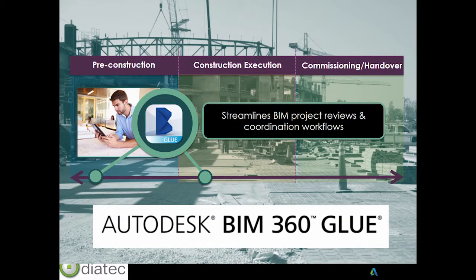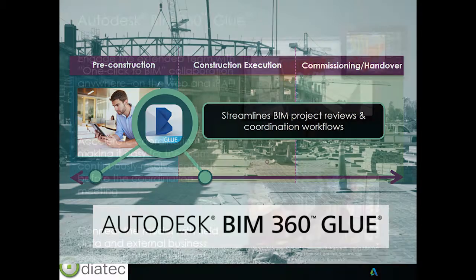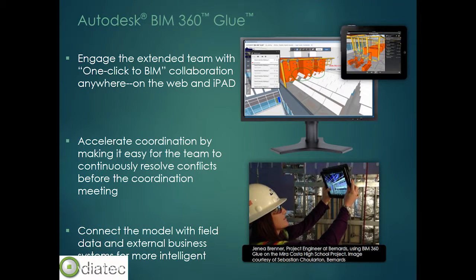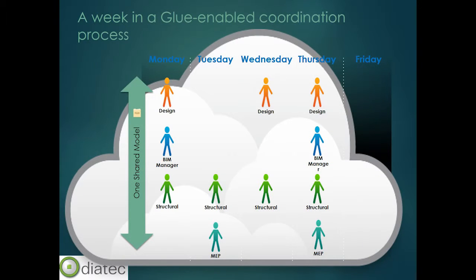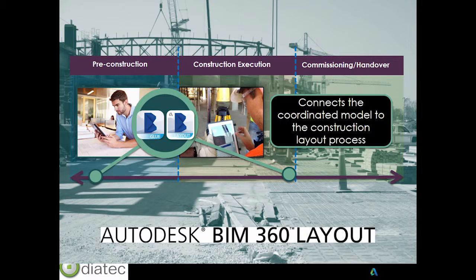When we look at Glue, it spans across pre-construction into construction execution and works on multidiscipline coordination. During the phase where a constructability model is being created, each member of the design team has an opportunity to review, discuss, and analyze what's being done across multiple disciplines. We can coordinate singular models into federated models and view them through the Glue viewing tools — redlining, markup, and viewing from anywhere, even on an iPad with the Glue application. Accelerated coordination means teams aren't waiting extended periods for issues to be resolved. Members working off a shared model can coordinate at different times throughout a working week rather than working independently.